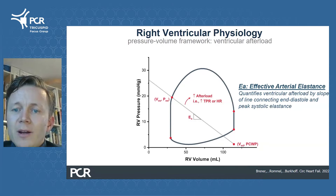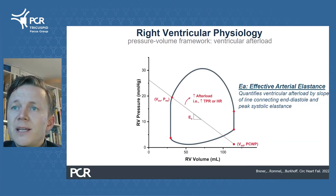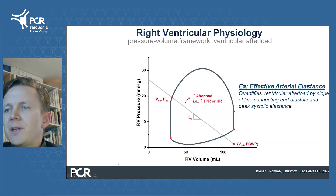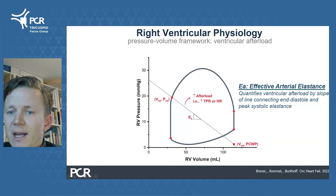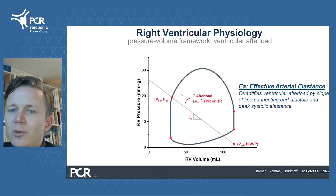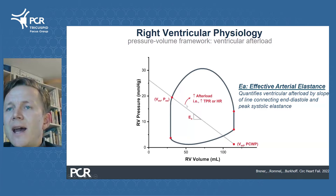The pressure-volume loop diagram also informs on pulmonary arterial properties and RV afterload. Afterload is represented by the effective arterial elastance, which is the line connecting coordinates at end-diastole and end-systole. As the slope of that line increases, afterload also increases.